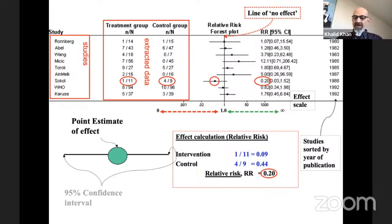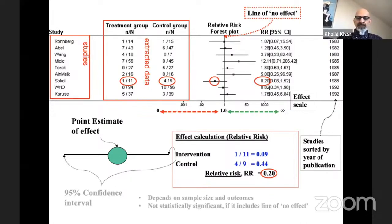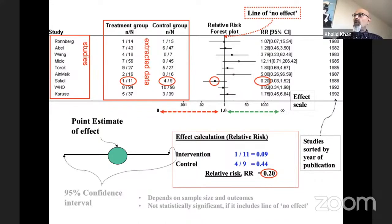I recommend that you calculate the confidence interval using statistical software rather than a handheld calculator. The meta-analysis has the ability to take all these data and combine them into a single result. You can see that none of the single results of the trials are statistically significant, because the confidence intervals include the value one.